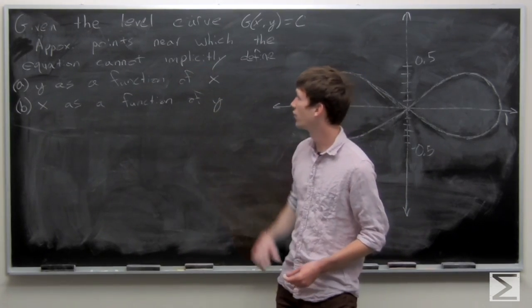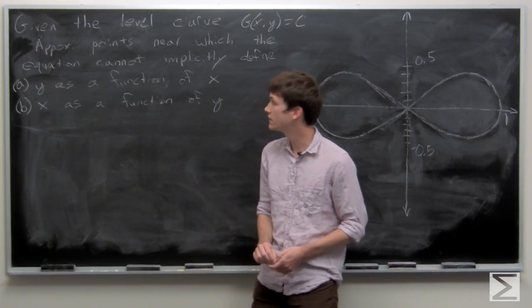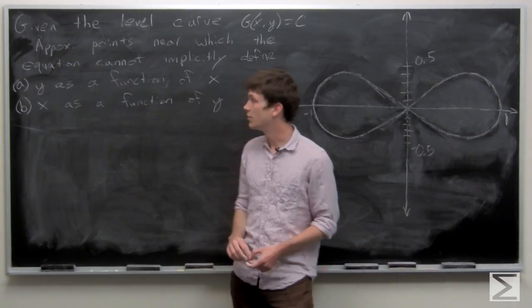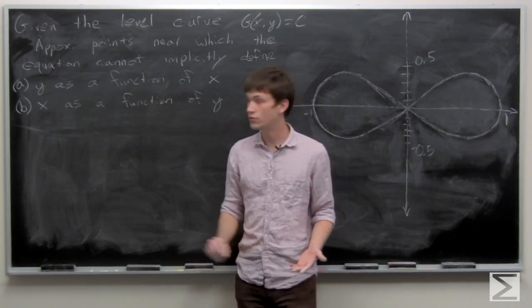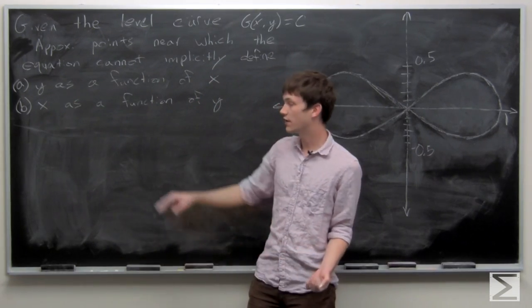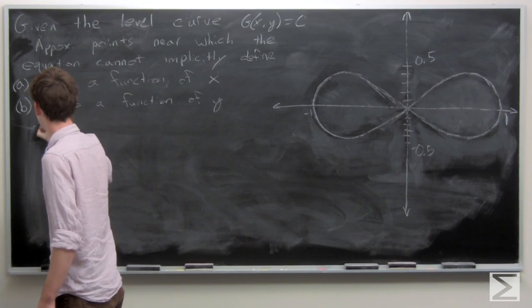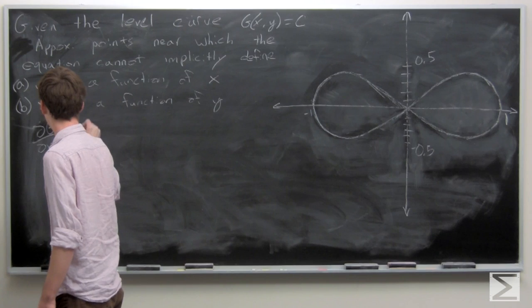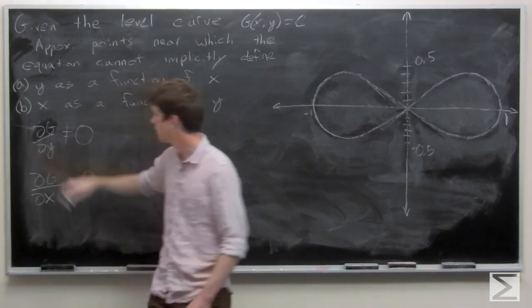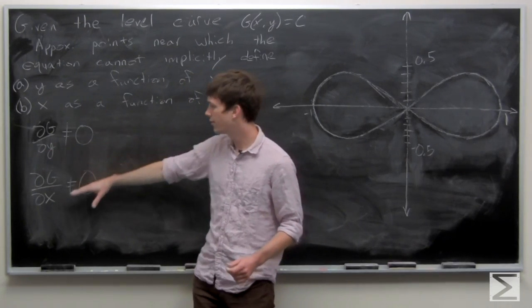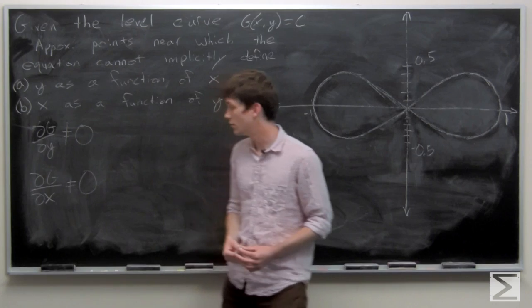In this problem we're given a level curve g of xy equals c as shown, and we're asked to approximate points near which the equation cannot implicitly define y as a function of x, and x as a function of y. In order for our equation to implicitly define y as a function of x, we need the partial derivative of g with respect to y to be non-zero, and in order to define x as a function of y, we need the partial derivative of g with respect to x to be non-zero.